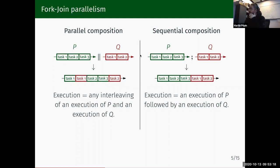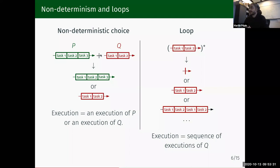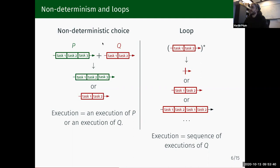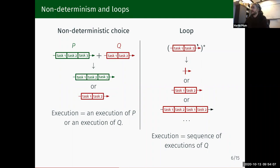That's not enough to write interesting programs, so I introduce two other operators. First, the choice operator that models branching that may happen at runtime. Think of an if-statement: if some condition, run P; otherwise run Q — and you can't guess the condition before running the program. This is why we call this a non-deterministic choice. An execution of P choice Q is either an execution of P or an execution of Q. Another useful construction is the loop. We use a well-behaved form of loop, denoted Q*, where an execution of Q* is any sequence of executions of Q — it may do nothing, or run Q once, twice, three times, and so on.